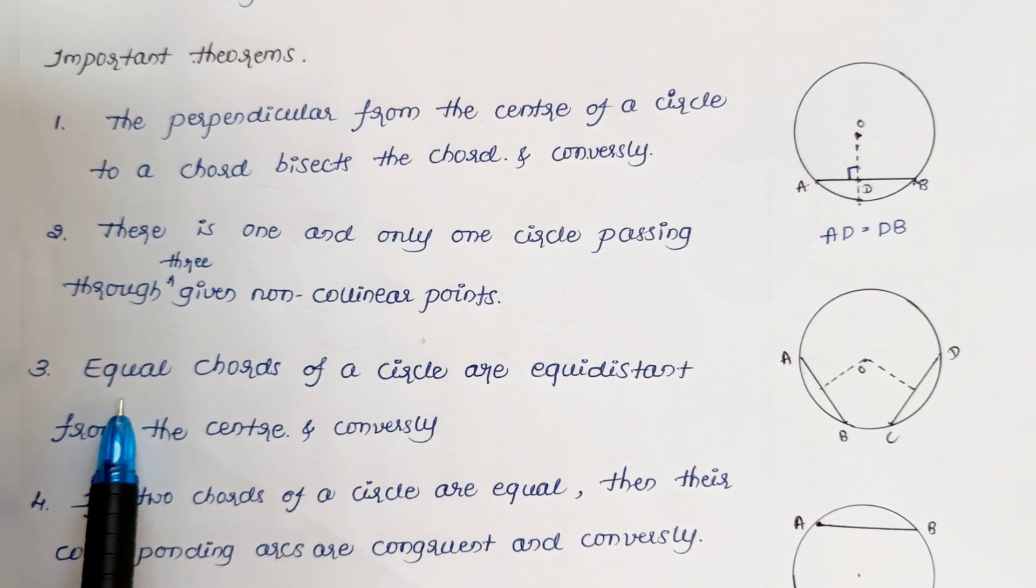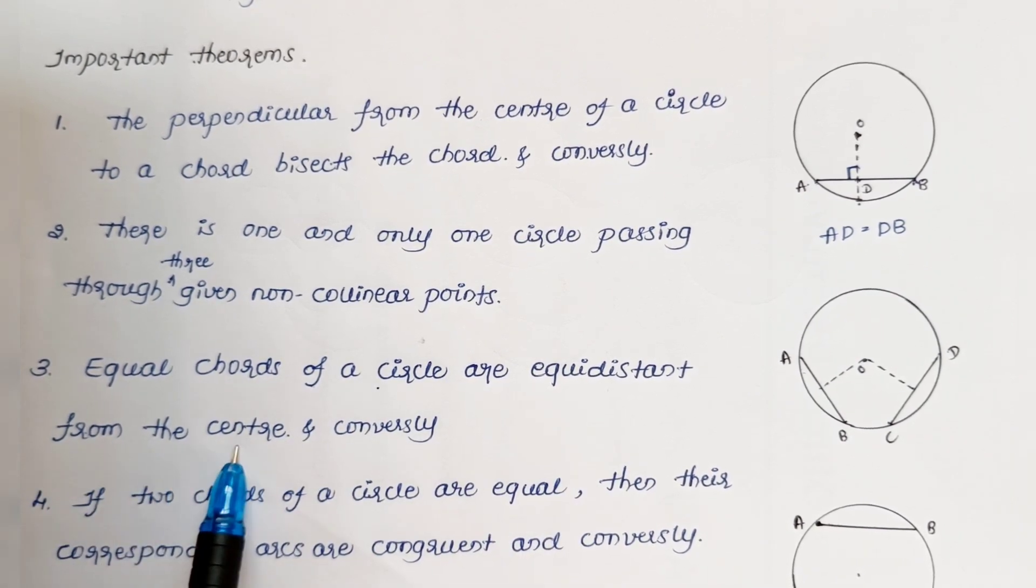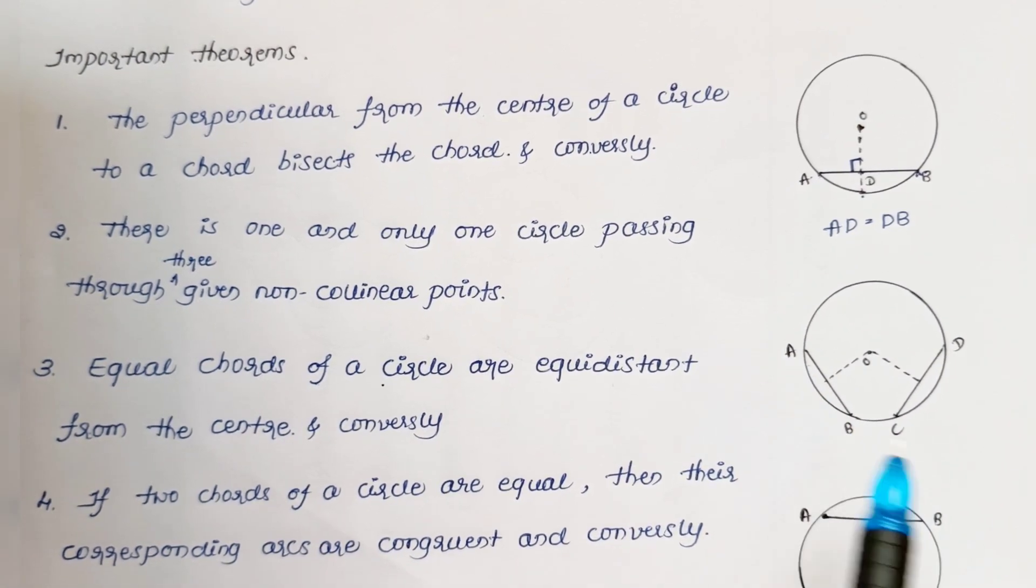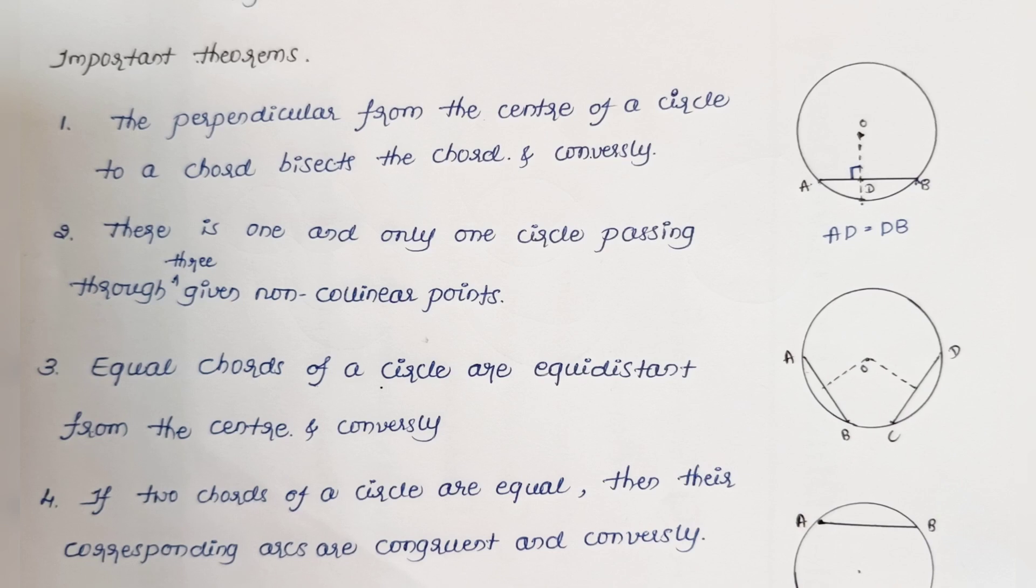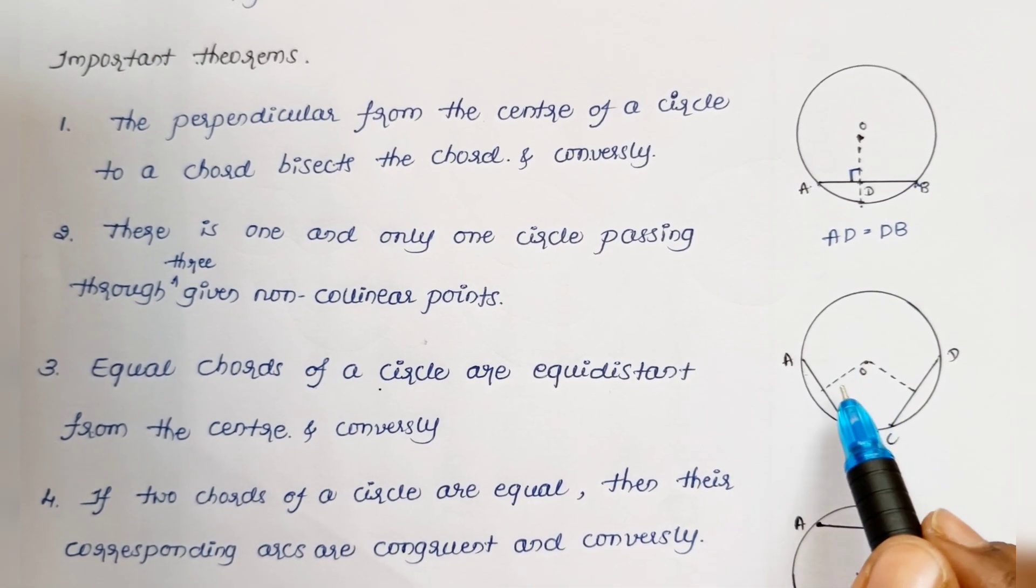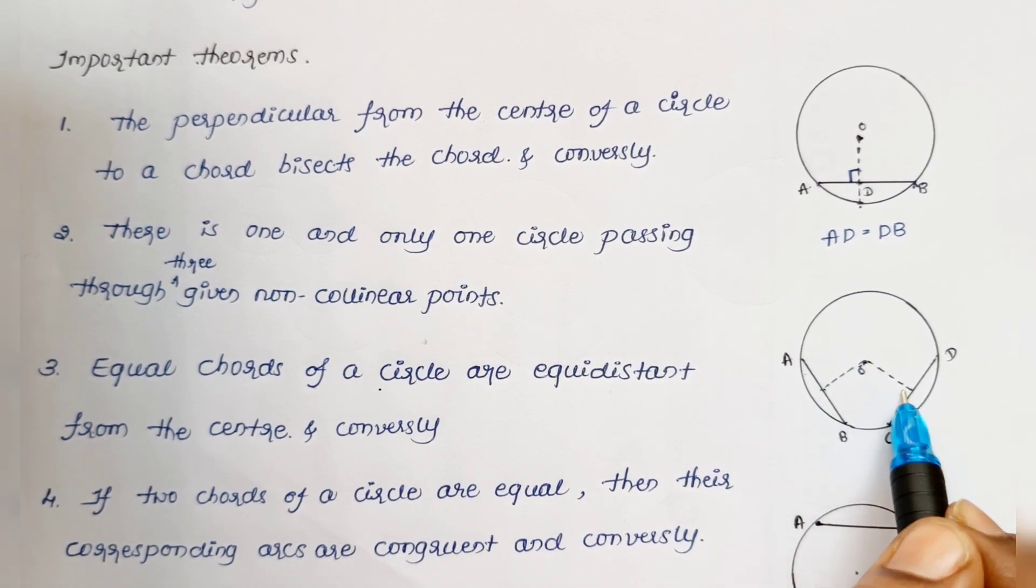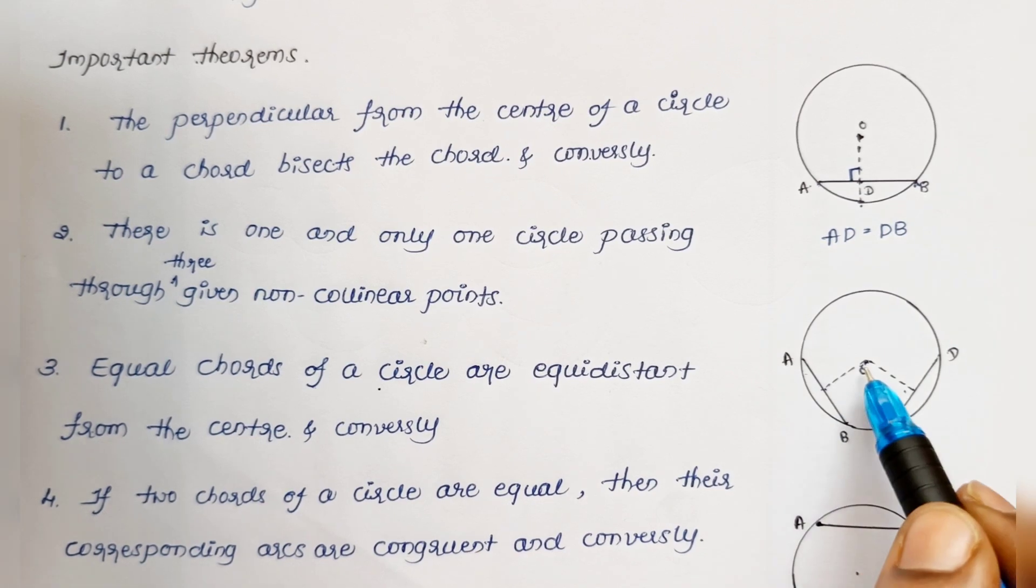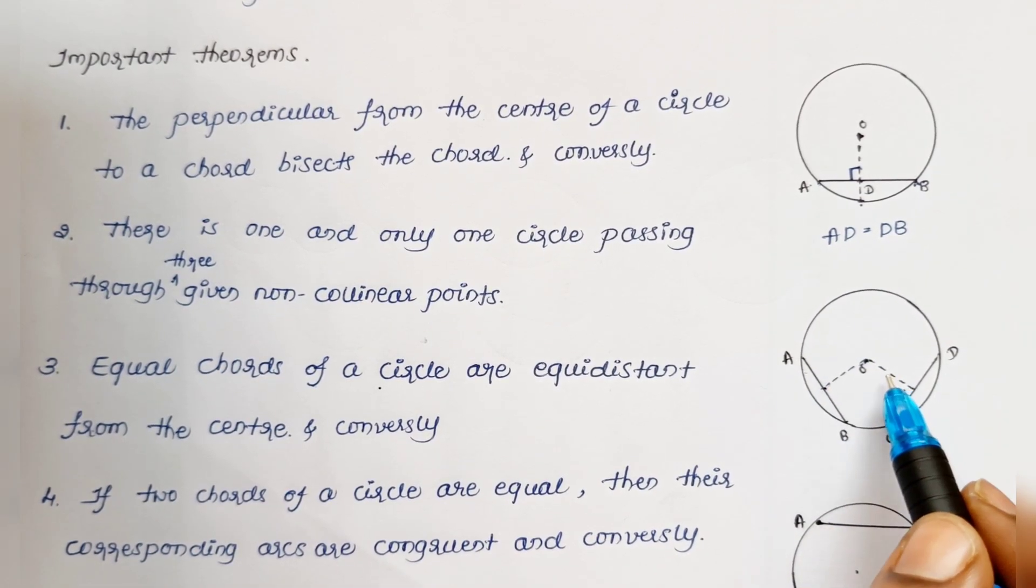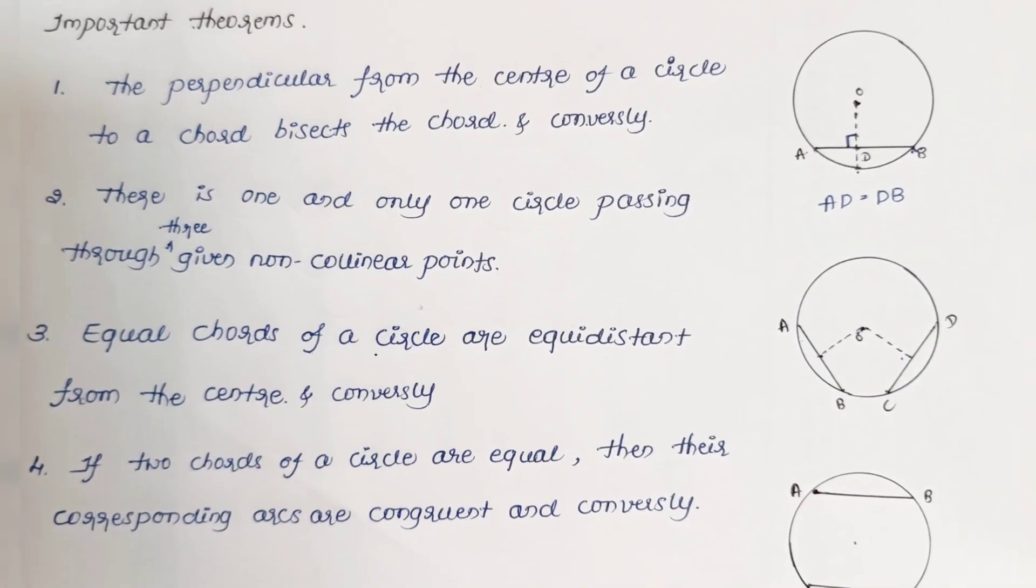Next: equal chords of a circle are equidistant from the center, and conversely. AB and CD, if they are of equal length, then they are equidistant from the center. The distance from the center to each chord is equal. And conversely, if the distances from the center are equal, then their chords will be equal.